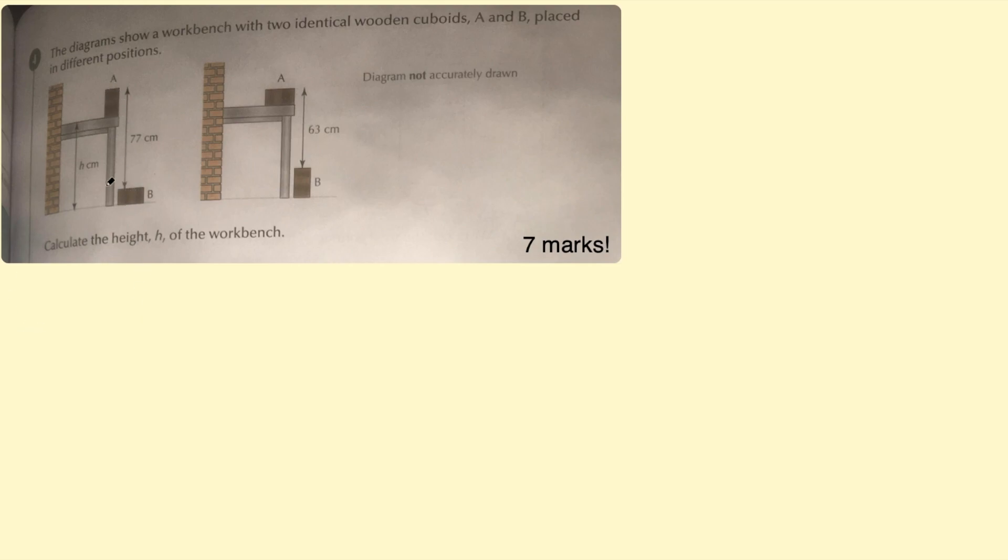If we knew the width and the length of these blocks, it would be easy, right? Let's say this one was five centimeters. This one was 10 centimeters. We could work this out. We could say 77 subtract five plus 10 would equal H. But we don't know the measurements of the cuboids.